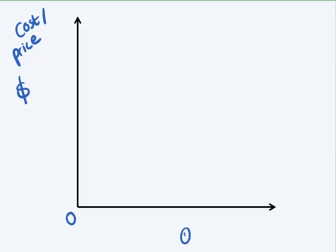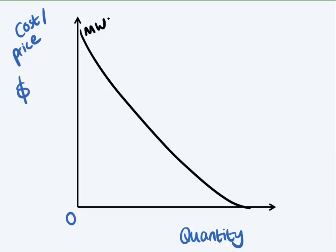And then quantity. First curve I'm going to draw is my marginal willingness to pay curve. Now we've said initially you're willing to pay a lot of money, and then as you get more, your willingness to pay decreases with each unit that you buy.